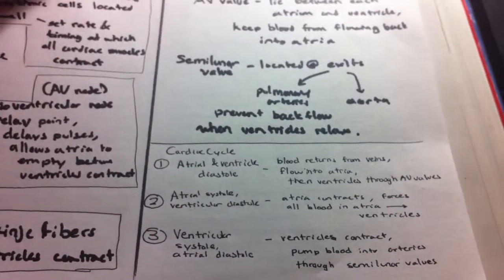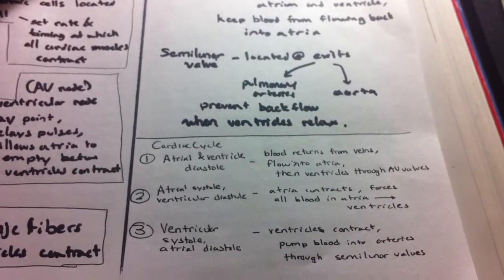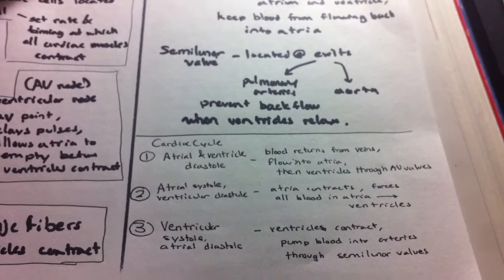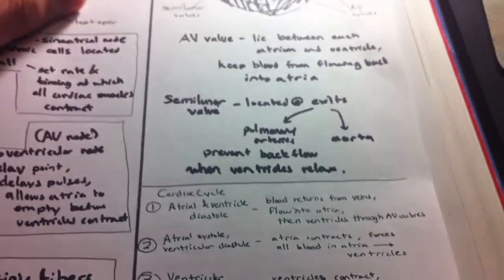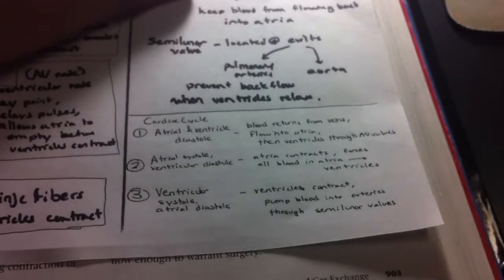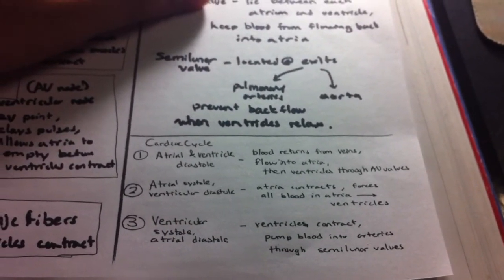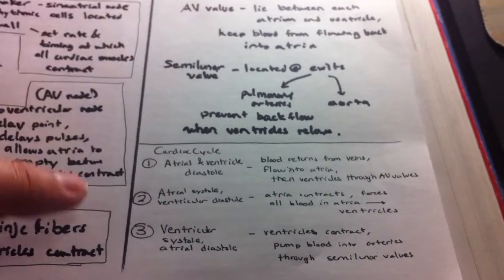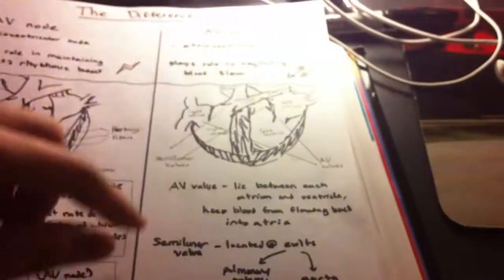And for the third part, we have ventricular systole and atrial diastole. So the ventricles contract and send the blood out through either the pulmonary arteries or the aorta. And that's how we go back to the beginning with blood entering back in through the atria.